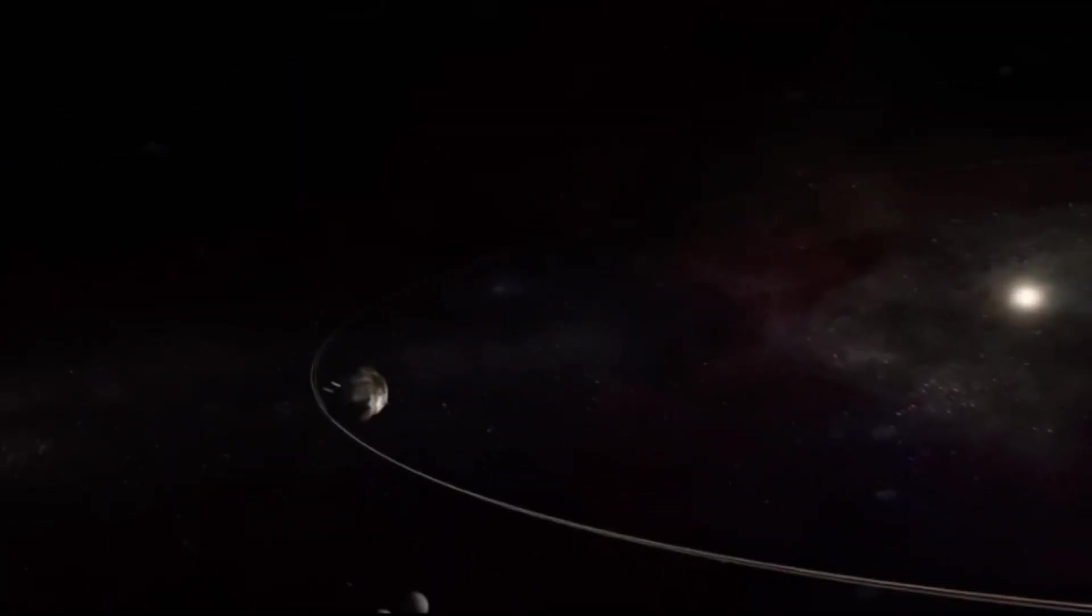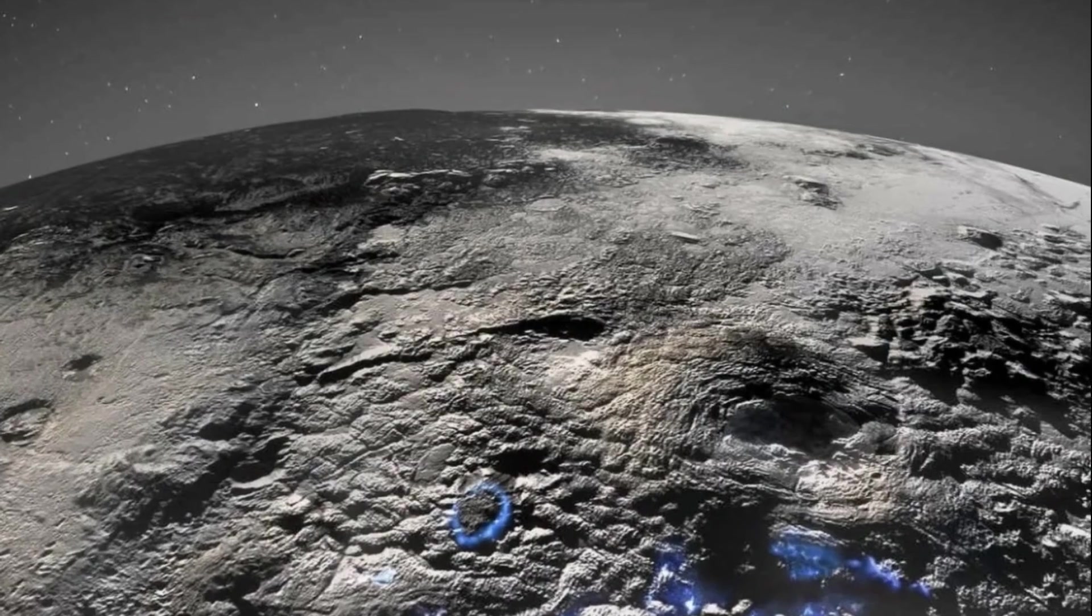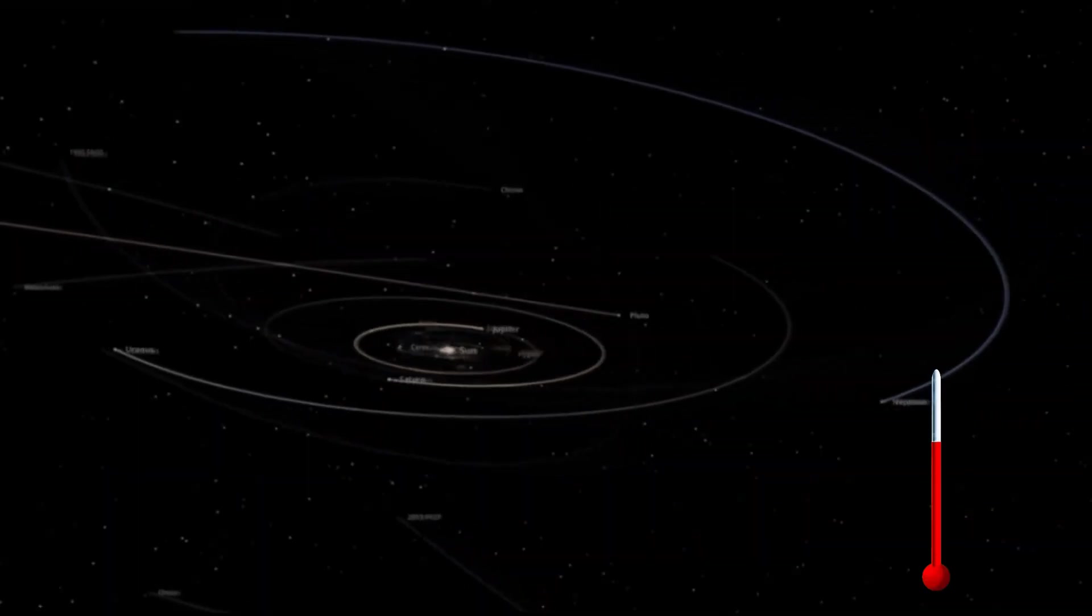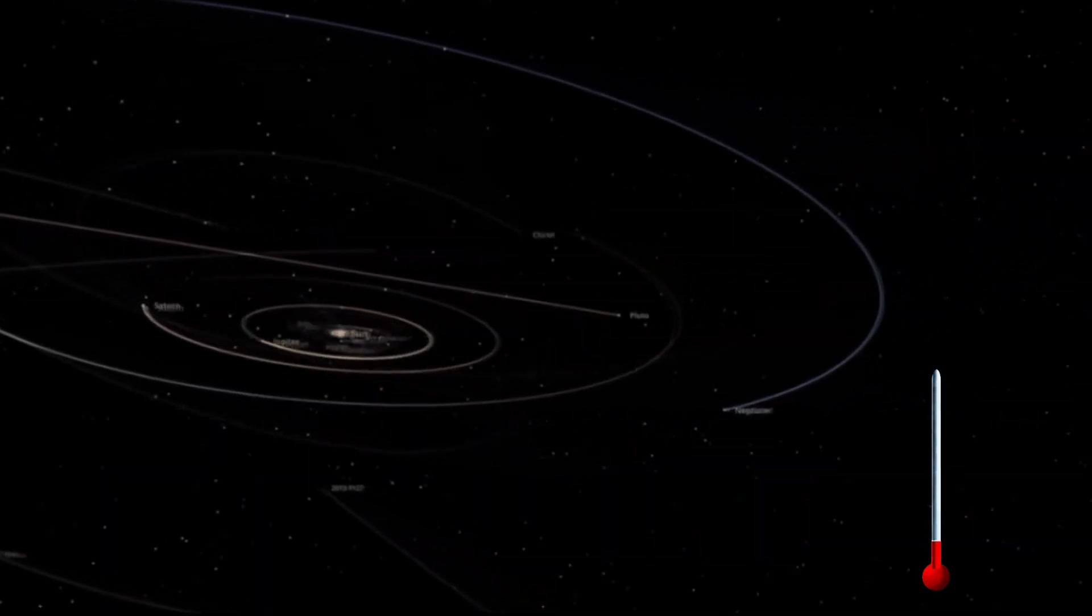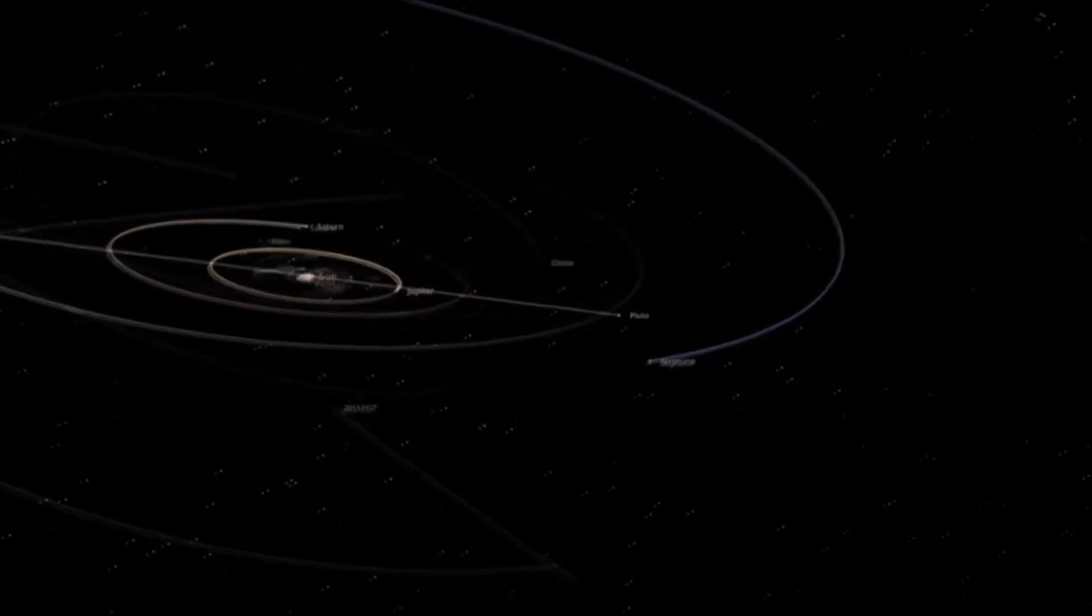It's also interesting to note that Pluto has its own kind of sea made of nitrogen ice, with water icebergs floating in it.